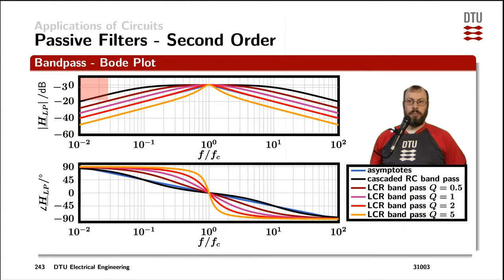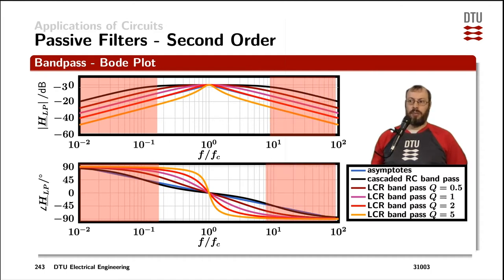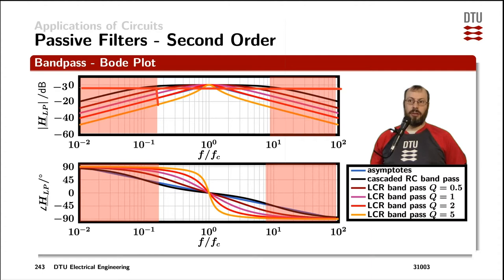The Bode plot is similar again with the stop bands at the low frequencies, and the Q value of the filter has an influence on how far up we can define the stop band. The same goes for the stop band at the high frequencies, which is also reflected in the phase behavior. Typically, you would put the border between passband and stop band where you have the minus 3 dB point, which occurs at different frequencies depending on the waveform.